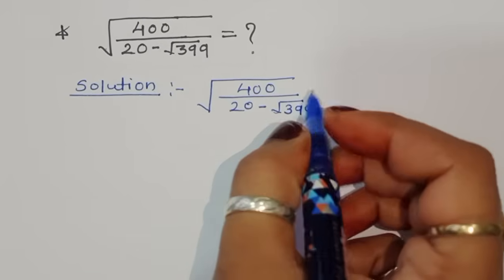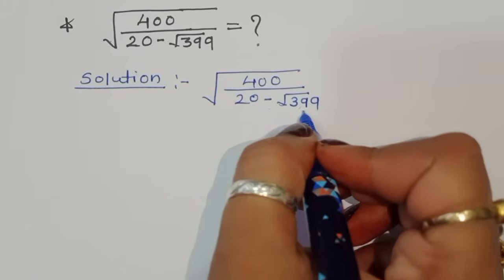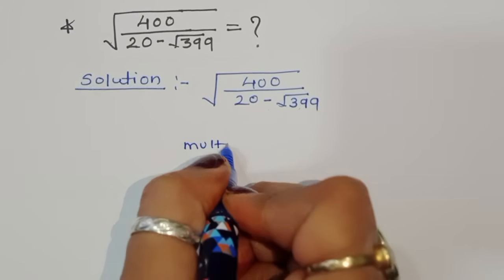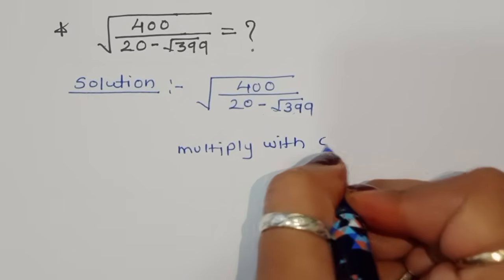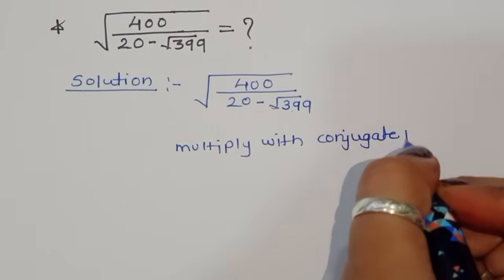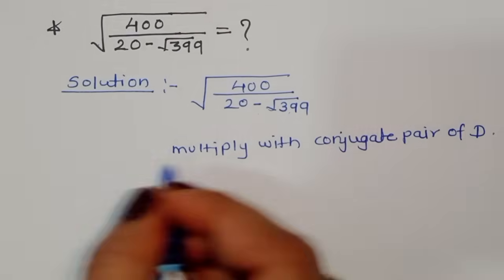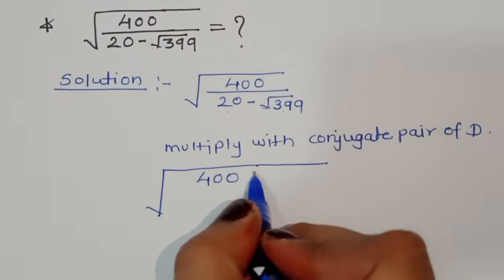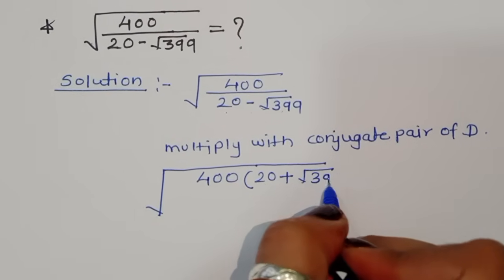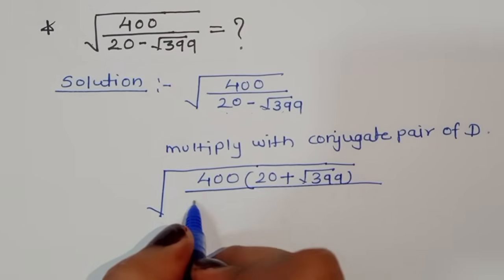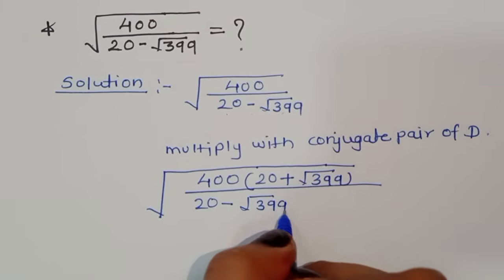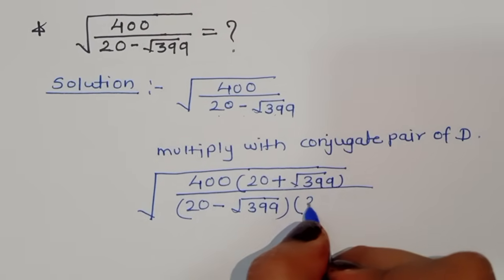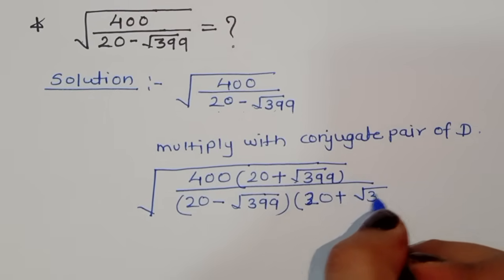We can do one thing here. We can multiply with the conjugate pair of the denominator, which is (20 plus √399). We have to multiply with this number. When we multiply with the conjugate pair of the denominator, we will get 400 times (20 plus √399) in the numerator, divided by (20 minus √399) multiplied by its conjugate (20 plus √399).